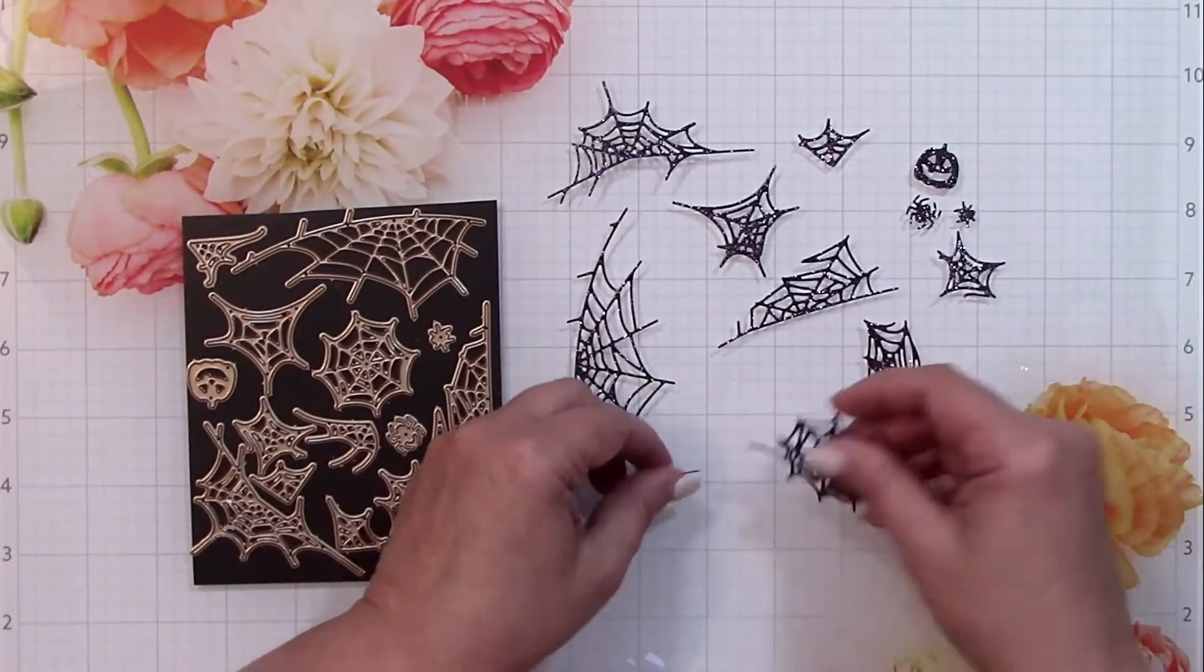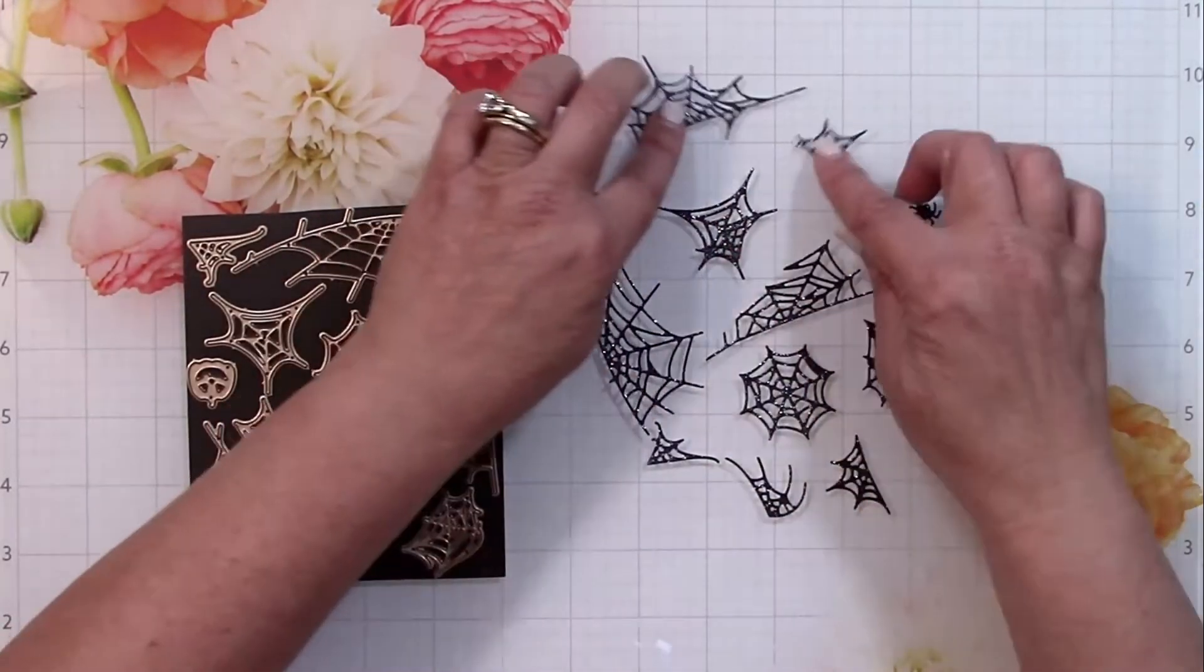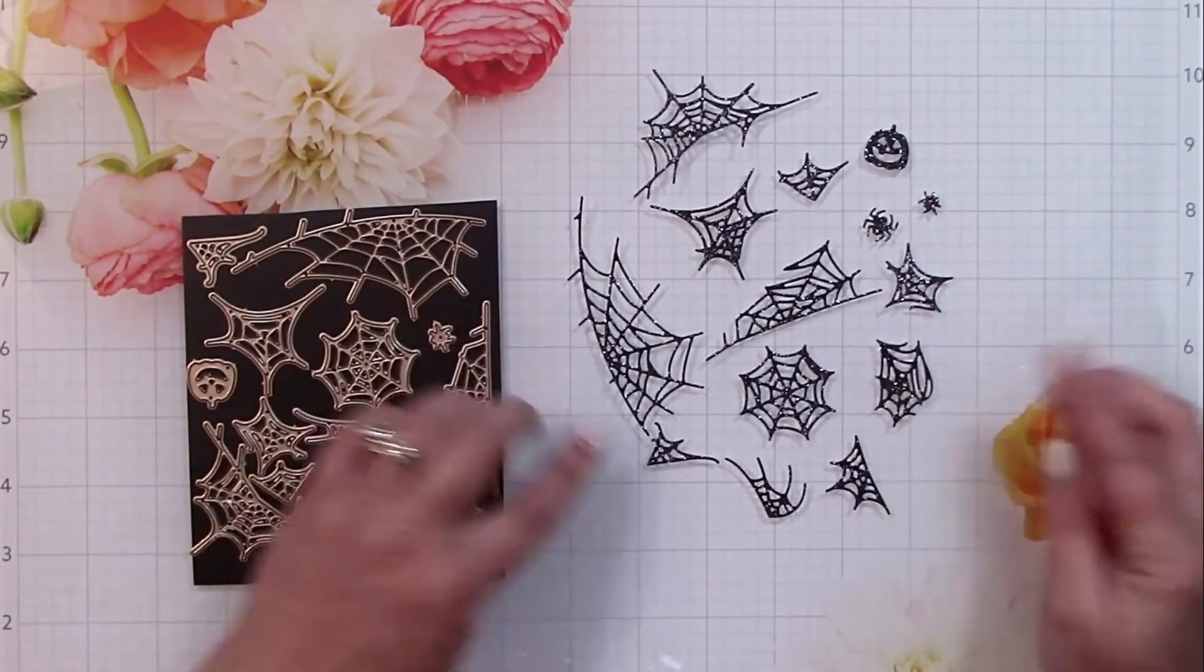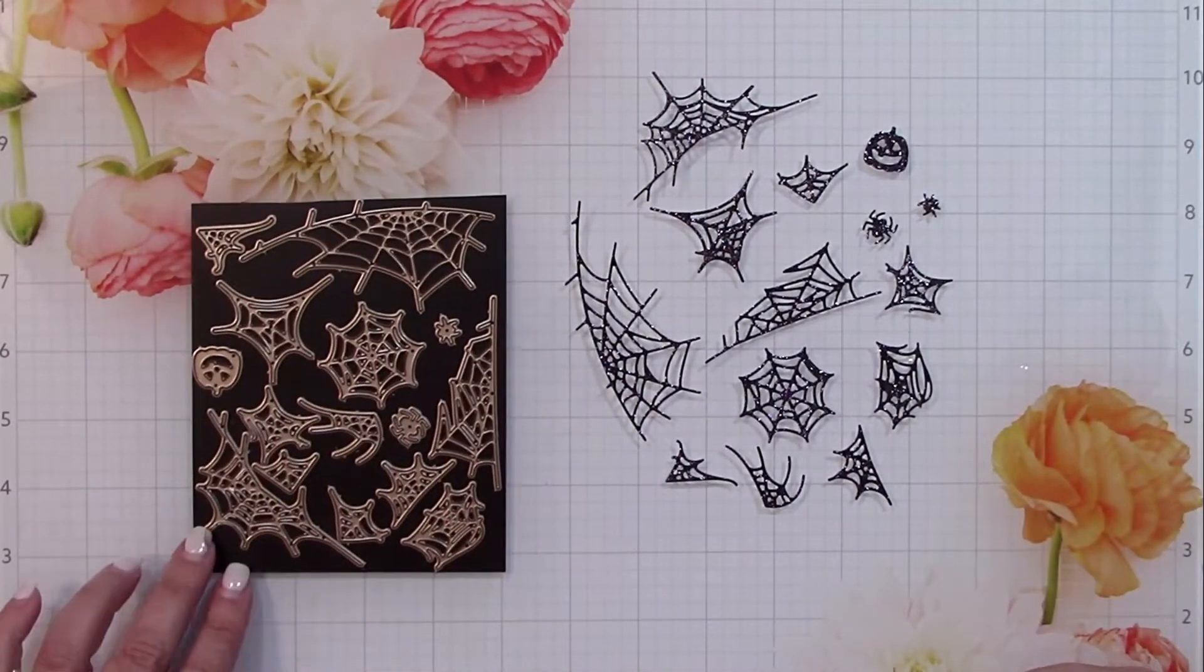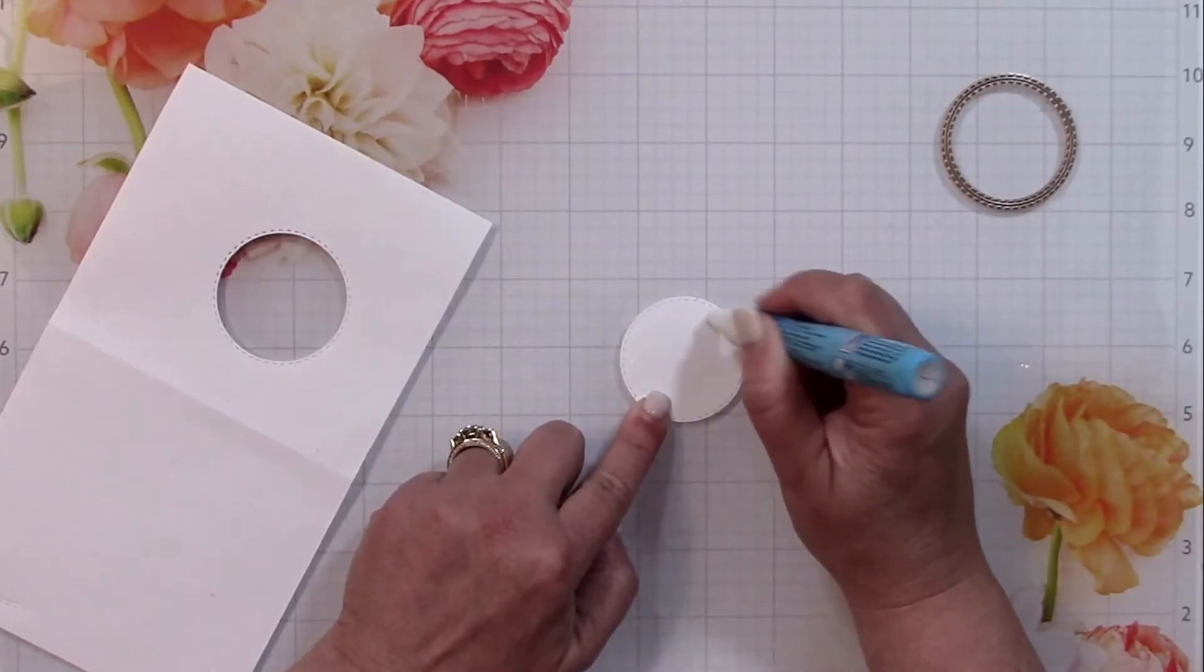So we've got corners, we've got long tall skinny ones, we've got big round ones and everything in between. It's really a fun set and I'm definitely going to be using some of these webs in my card today.